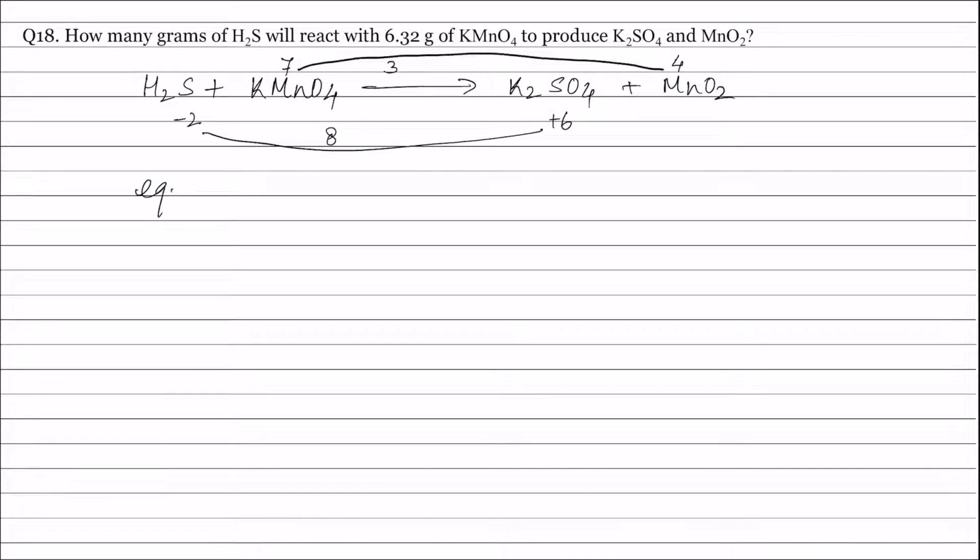Now equivalence of H2S is equal to equivalence of KMnO4. Equivalence of H2S will be weight of H2S, let W represent the weight of H2S, divided by equivalent weight of H2S. Equivalent weight of H2S will be molecular weight of H2S that is 34 divided by valency factor of H2S that is 8, and this is equal to equivalence of KMnO4.